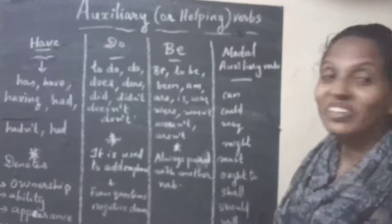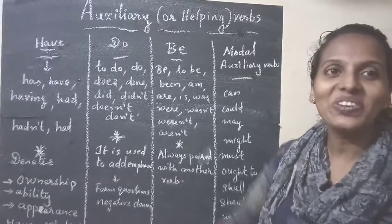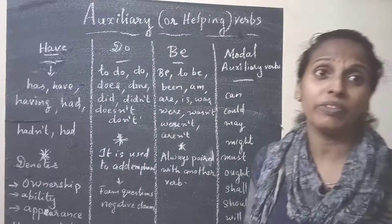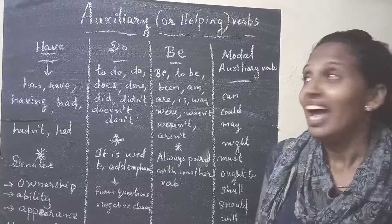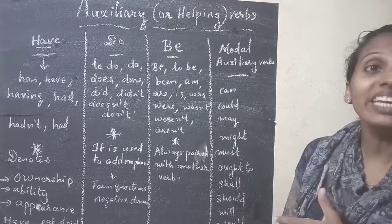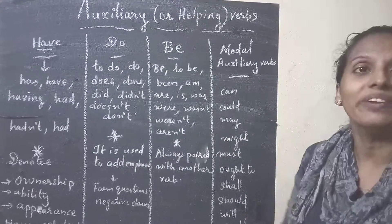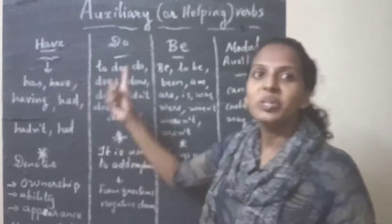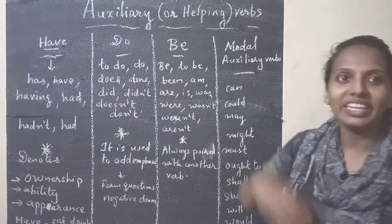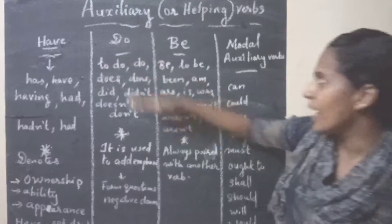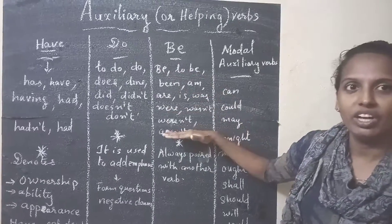Today I would like to introduce to you auxiliary verbs, or helping verbs. The main auxiliary verbs are have, do, and be, and all their related forms are part of these groups.